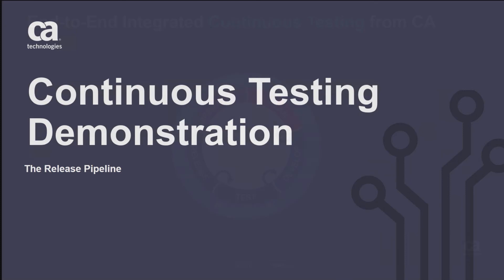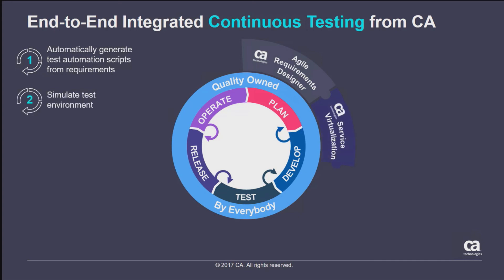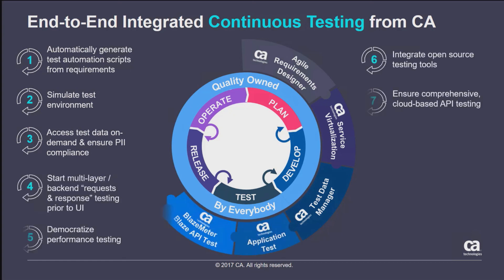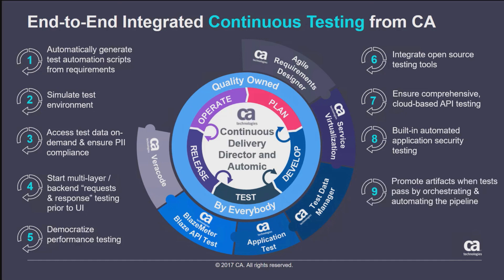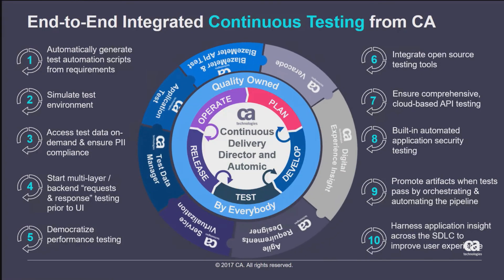Going back to our summary: what we just saw was the CA toolchain working together. We used Agile Requirement Designer to model our requirements, Service Virtualization for both the developer and the release pipeline, Test Data Management to generate our test data, Application Test for test execution, BlazeMeter for functional API and performance tests, and Vericode to confirm security scans are complete — all orchestrated via CDD and Automic. That's the end of the CA continuous testing story. Thank you for your time.